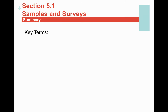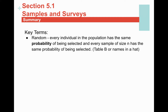Here are a couple of key terms you really need to memorize from section one. The first is the definition of randomness as it relates to sampling. What does random actually mean when we're sampling? It means that every individual in the population has the exact same probability of being selected — one over N. And every sample of size n has the same probability as every other sample of size n. They all have the exact same probability of being selected.